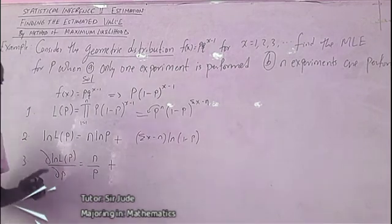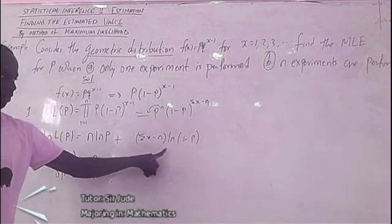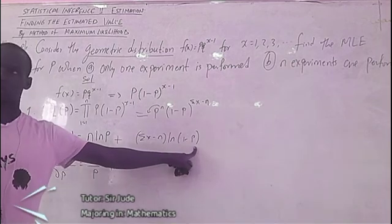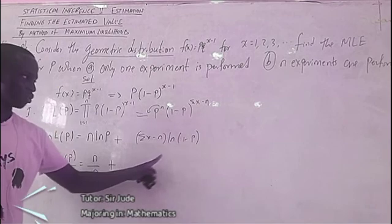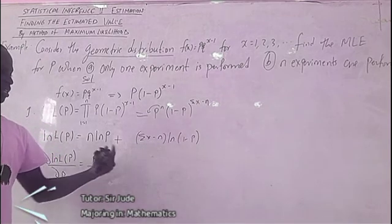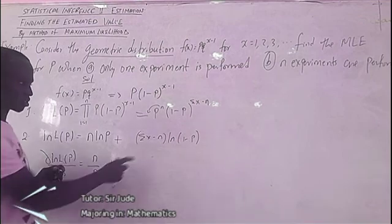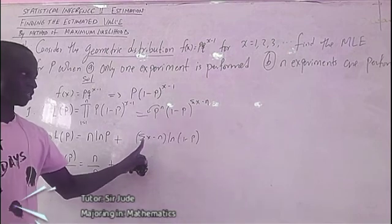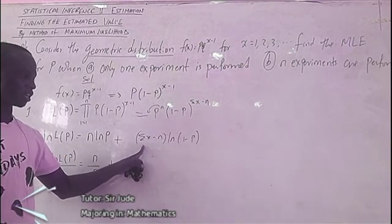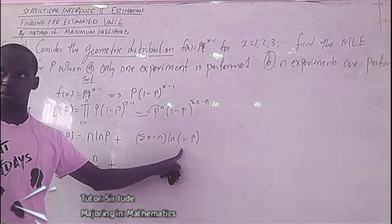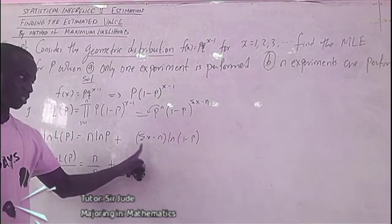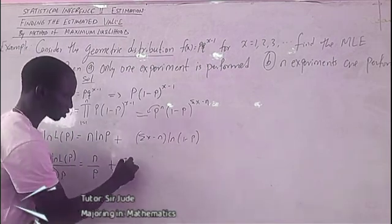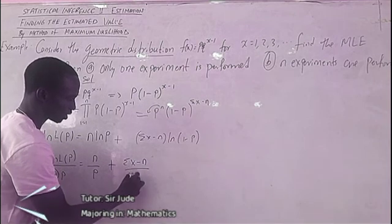For the second term, (summation x minus n) times ln(1 minus p), we keep summation x minus n constant and differentiate ln(1 minus p) with respect to p. Let u = 1 minus p, so du/dp = minus 1. This gives (summation x minus n) over (1 minus p) with a negative sign. So the full derivative is: n/p minus (summation x minus n)/(1 minus p).